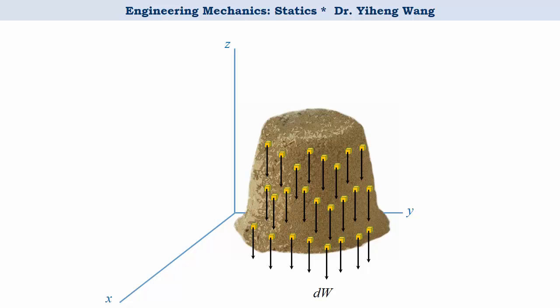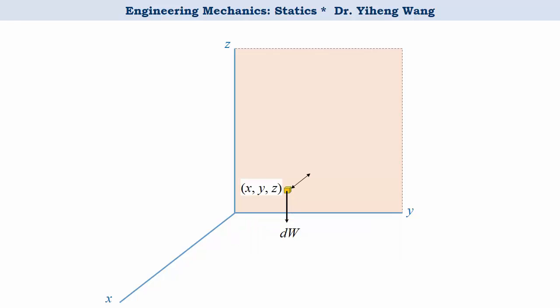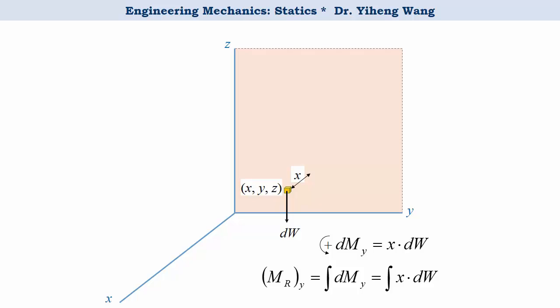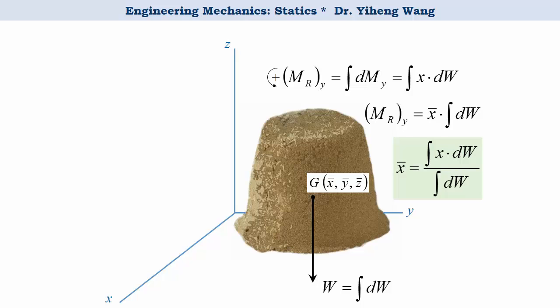Similarly, we want to find the resultant moment of the distributed load about the y-axis. We again pick an arbitrary particle at location x, y, z. Its moment about the y-axis equals its weight dw multiplied by the moment arm — the distance to the yz-plane — which is x. Therefore, the resultant moment about the y-axis is the integration of dMy, or the integration of x·dw. The concentrated force W must produce the same moment about the y-axis, which is moment arm x-bar times the integration of dw. By comparison, x-bar equals the integration of x·dw divided by the integration of dw.